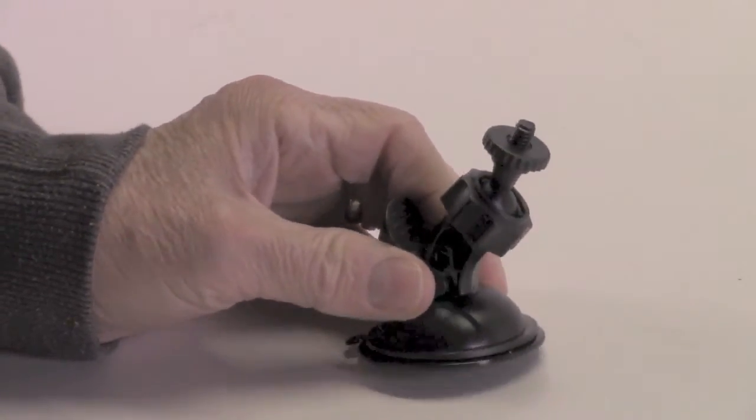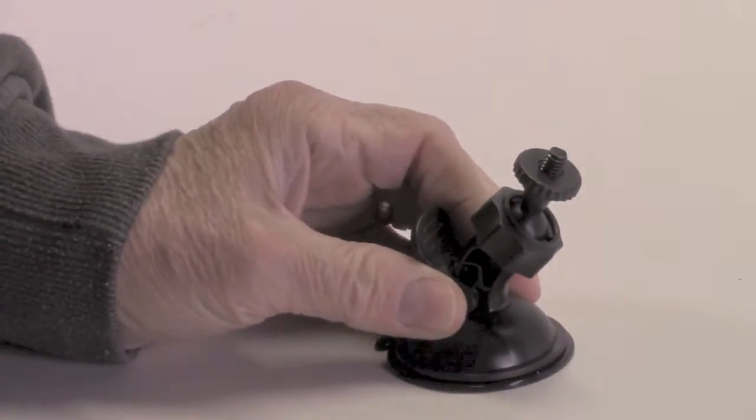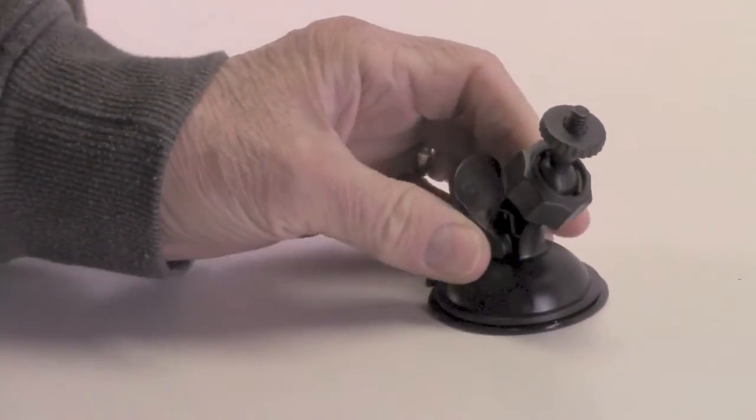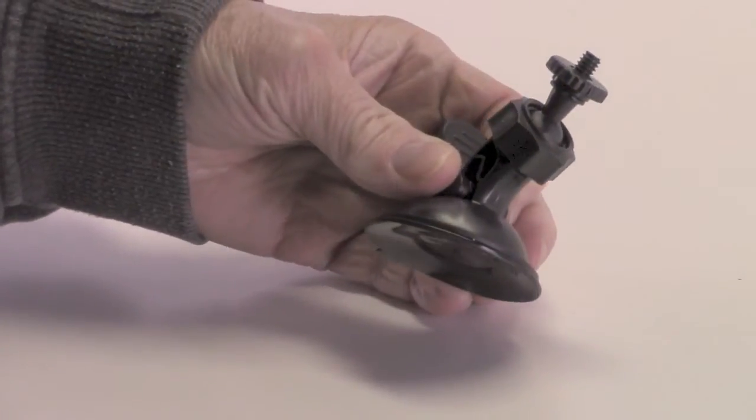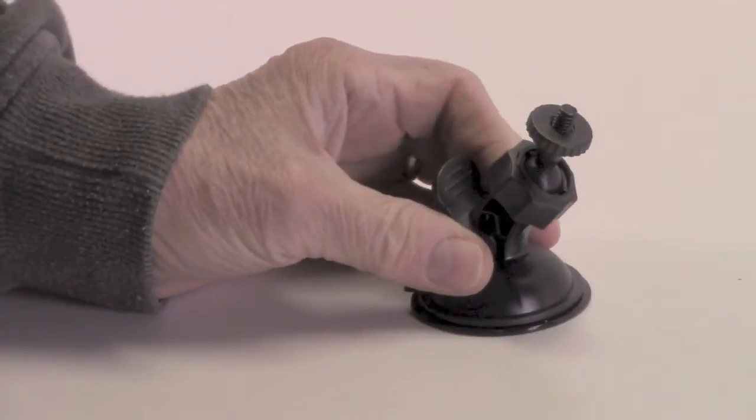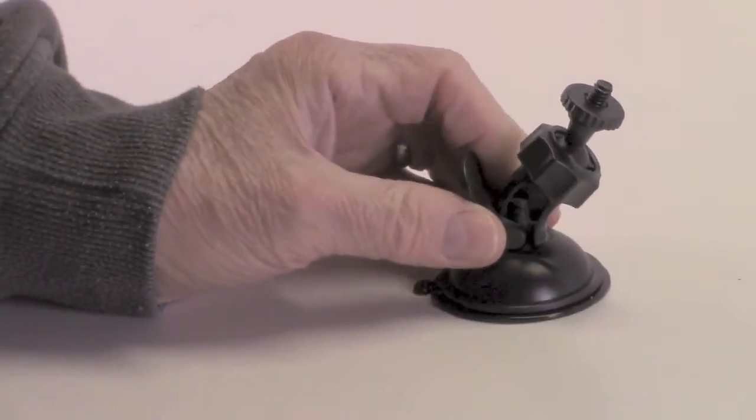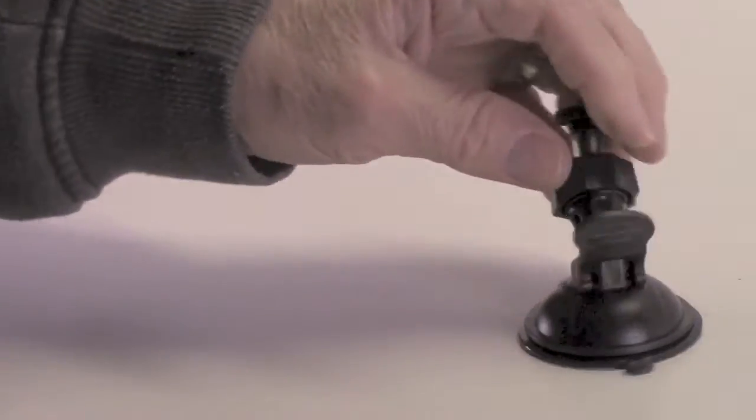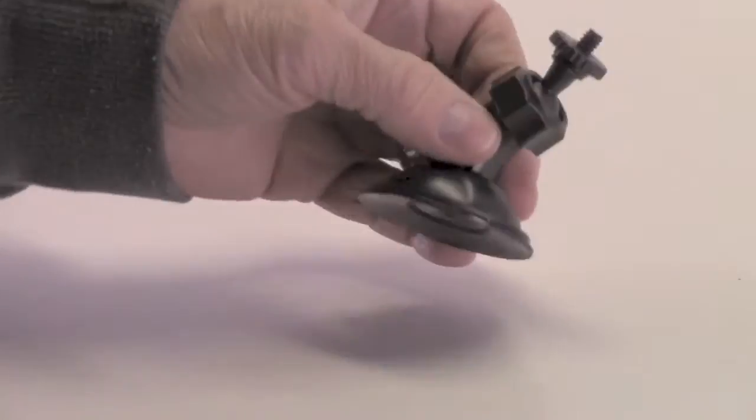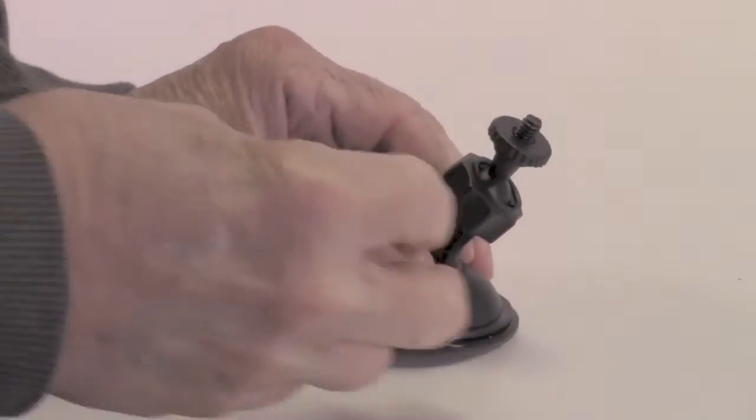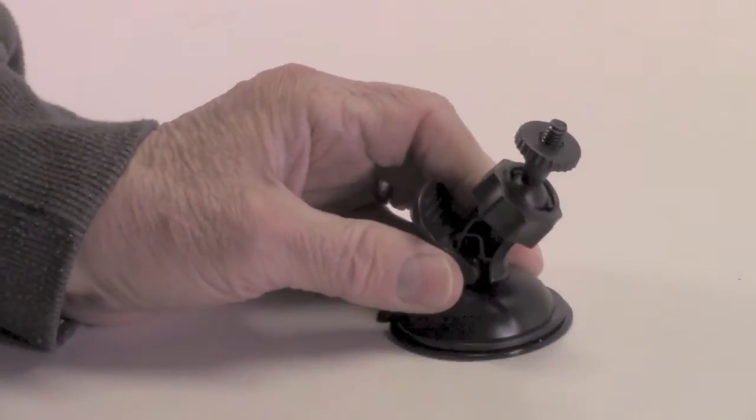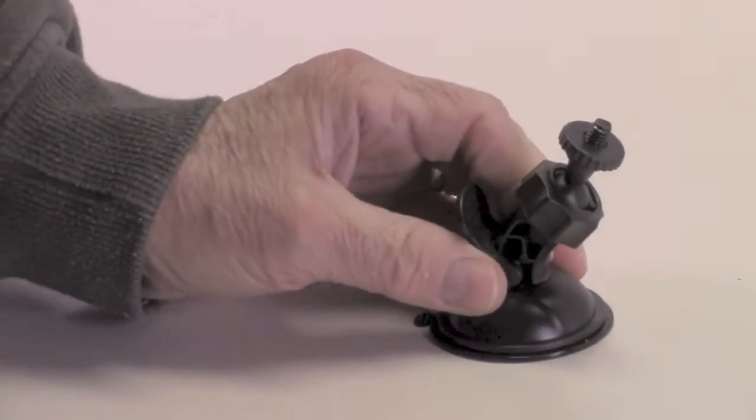Now this is a windshield mount for a GoPro type camera or an SJ4000, which is what I have. This was a dollar fifty on eBay and I have noticed that there's one for a dollar twenty nine which I think is better than this. It has a different adjustment on the side, but anyway I bought two of these and here's what I did with it.